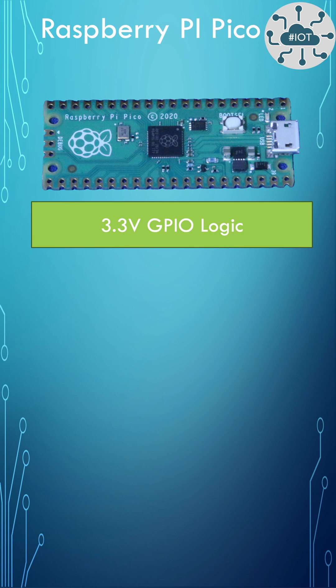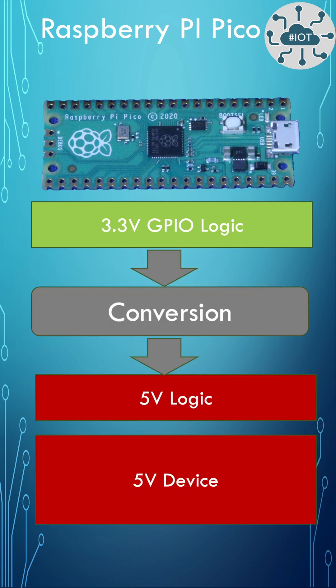The Pico is a 3.3 volt logic device, so we need a conversion circuit to translate from 3.3 volts to 5 volts for signaling.